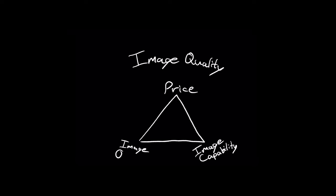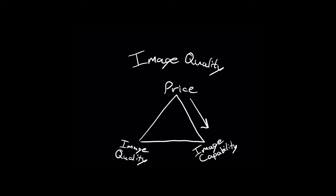Now these three things all correlate together. For example, let's say you want to get a really high image quality lens — you're therefore going to have to pay a high price for it, and most likely you're going to have a lot of image capability with it. However, let's say you pay for a low image quality lens — it's probably going to be much lower on the price end and much lower on the image quality end. Same thing goes for image capability: if you want a lot of image capability but don't want to pay a good price for it, you're not going to get a good image quality. But if you're willing to pay a high price for the image capability, you're also going to get a lot of image quality out of it. Now what do I mean by image quality and image capability?